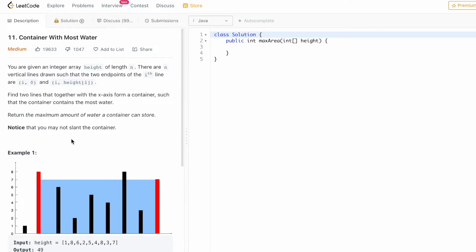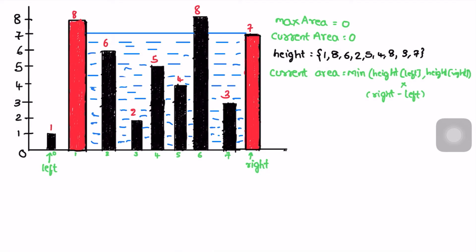Let's take the same example given to us. This is going to be a two-pointer approach. I've declared two pointers: left and right. Left will be pointing at the starting, that is the zeroth index position, and right will be pointing at the end of the array, the last index position. I've also declared two variables to calculate the max area and the current area for each iteration.